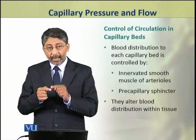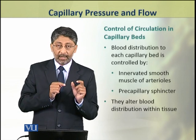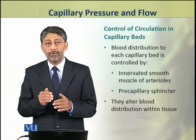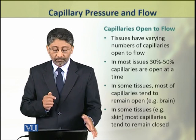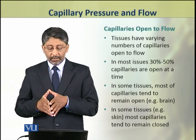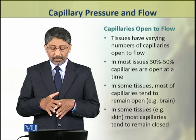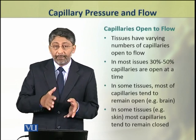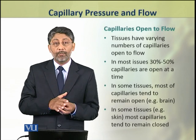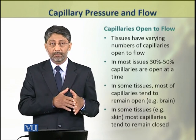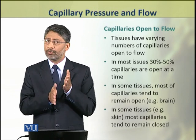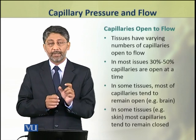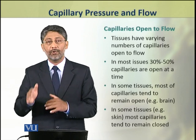The pre-capillary sphincter or smooth muscle of the arterioles can alter the blood distribution within the tissue. The tissues have networks of capillaries, but all capillaries are not open or closed at a time. In most tissues, about 30 to 50% of the capillaries are open to flow at a time.